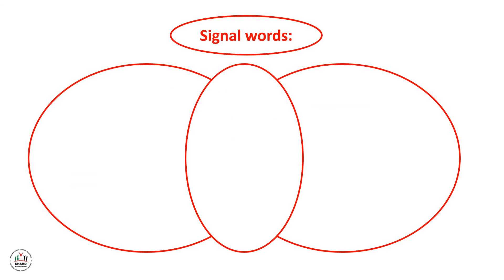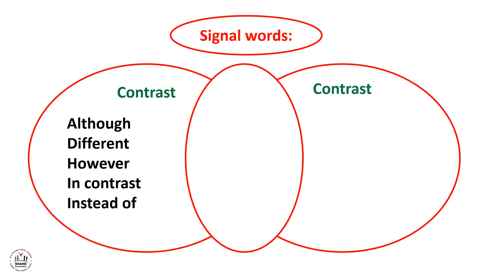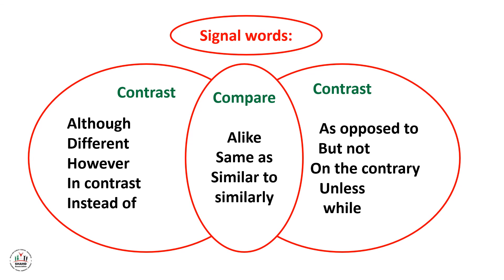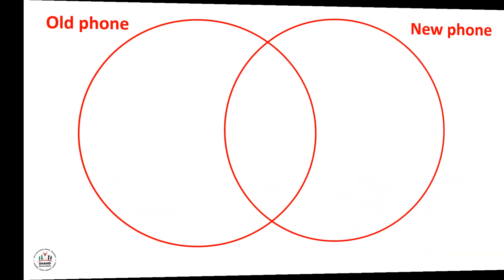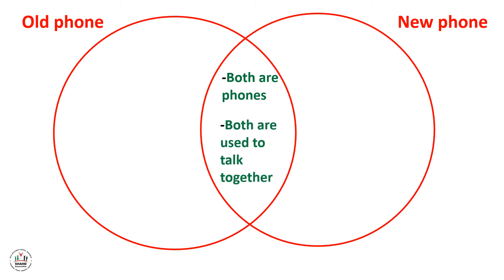Here are some signal words. When we contrast, we use words such as: although, different, opposite, but, on the contrary, and unless. When we compare, we use words such as: like, same, as, similar, alike, and together.